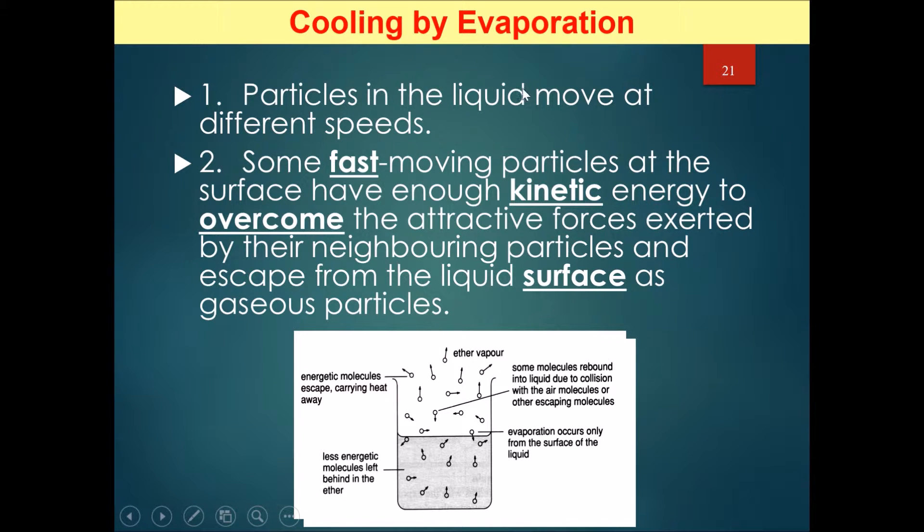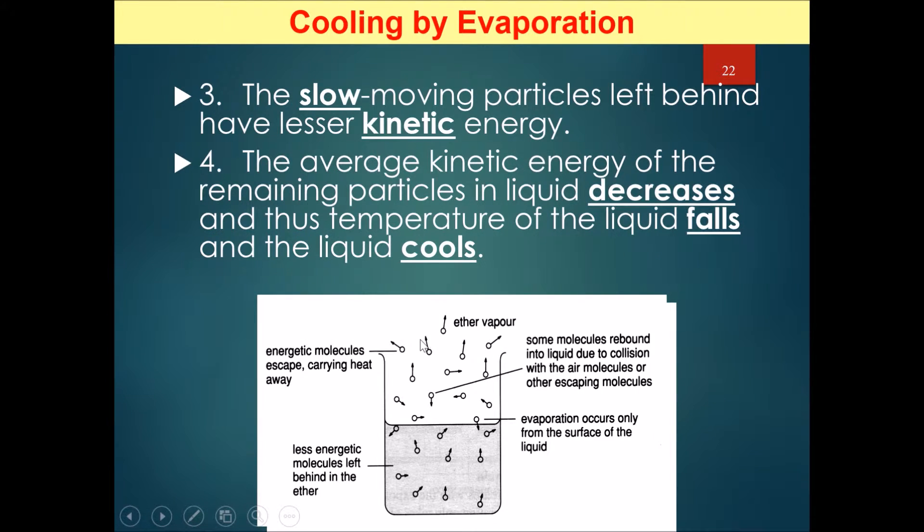So imagine if the fastest particles broke off and went off. What would you leave behind? Clearly you will leave behind the medium speed particles and also the slow speed particles. So the average speed of the particles left behind has decreased.